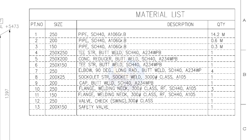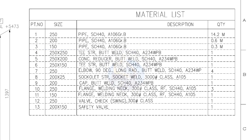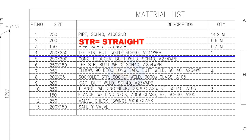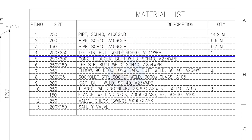Part numbers 1 to 3: all these pipes are schedule 40. Item number 4: 250 into 250, straight tee, butt welded, schedule 40. The quantity is 1.